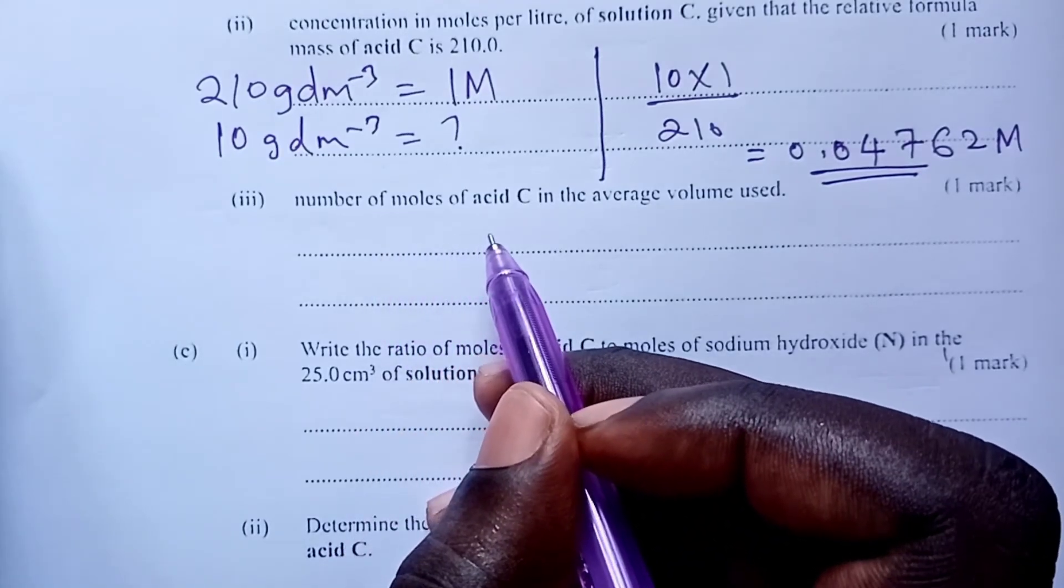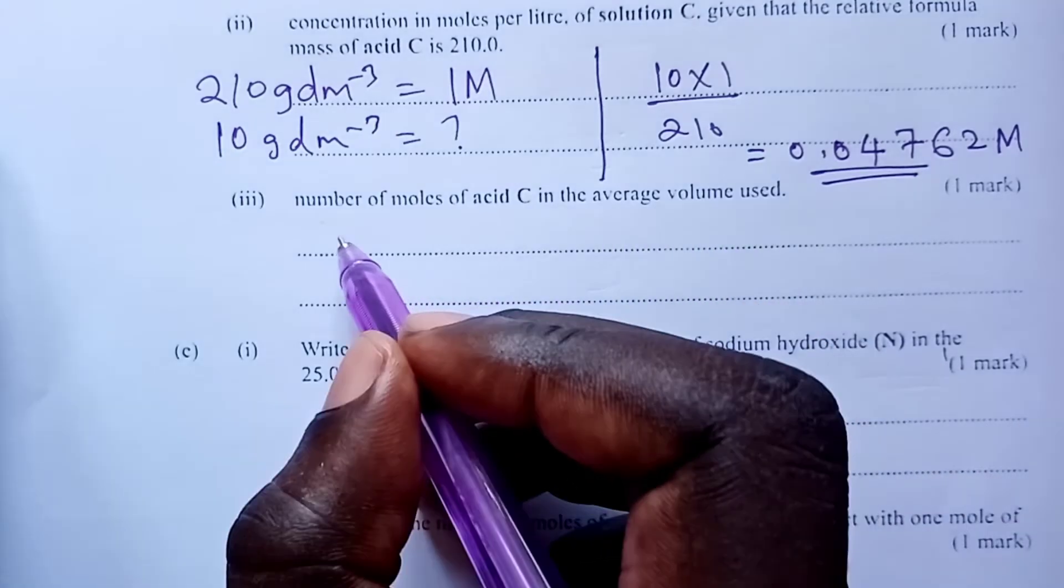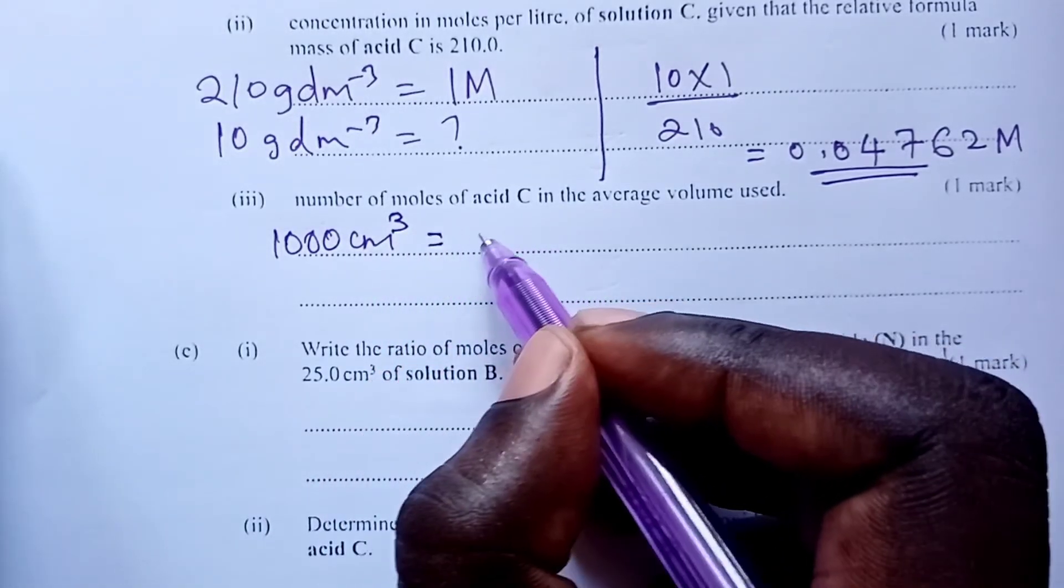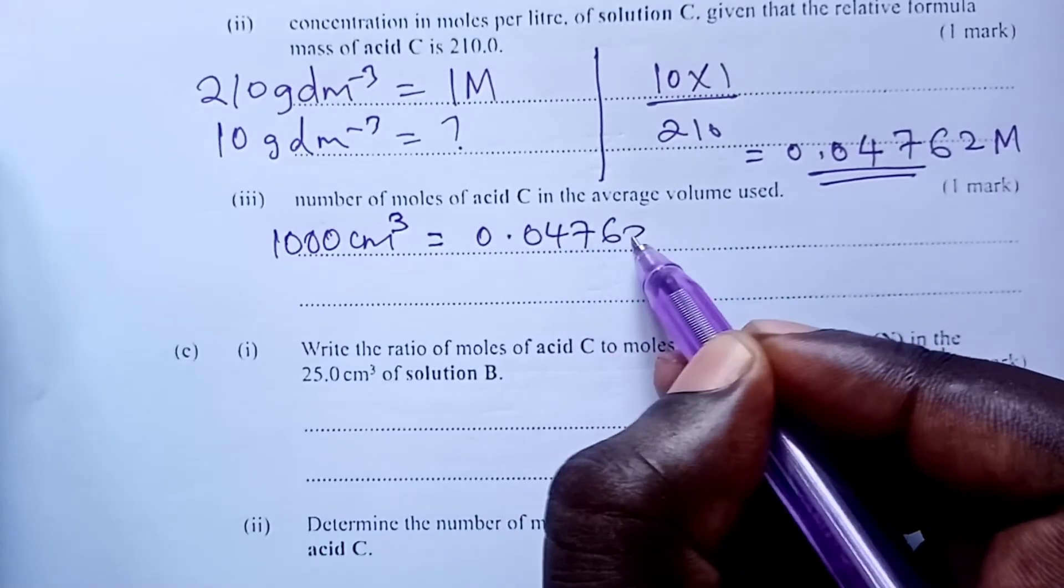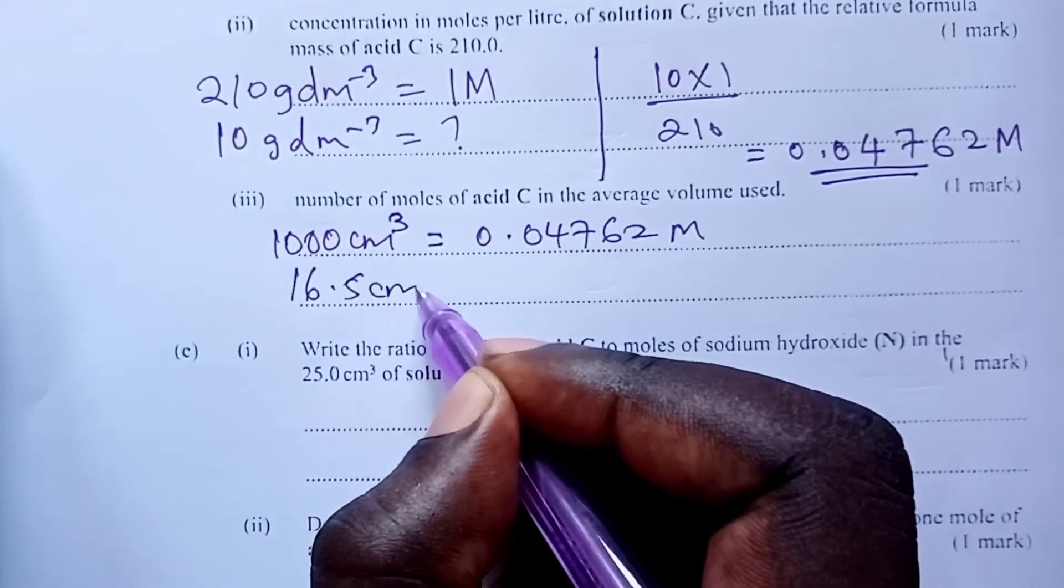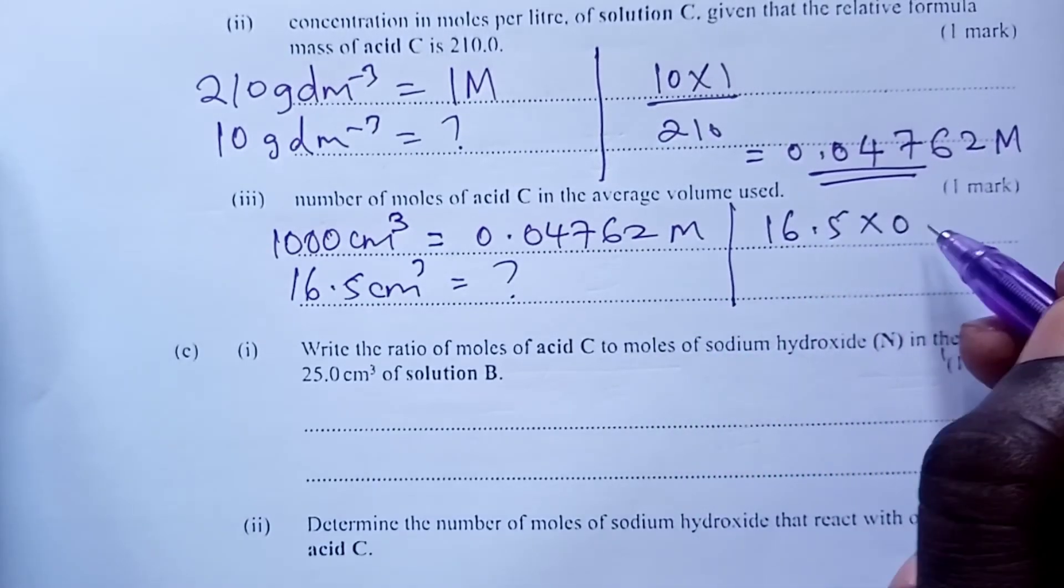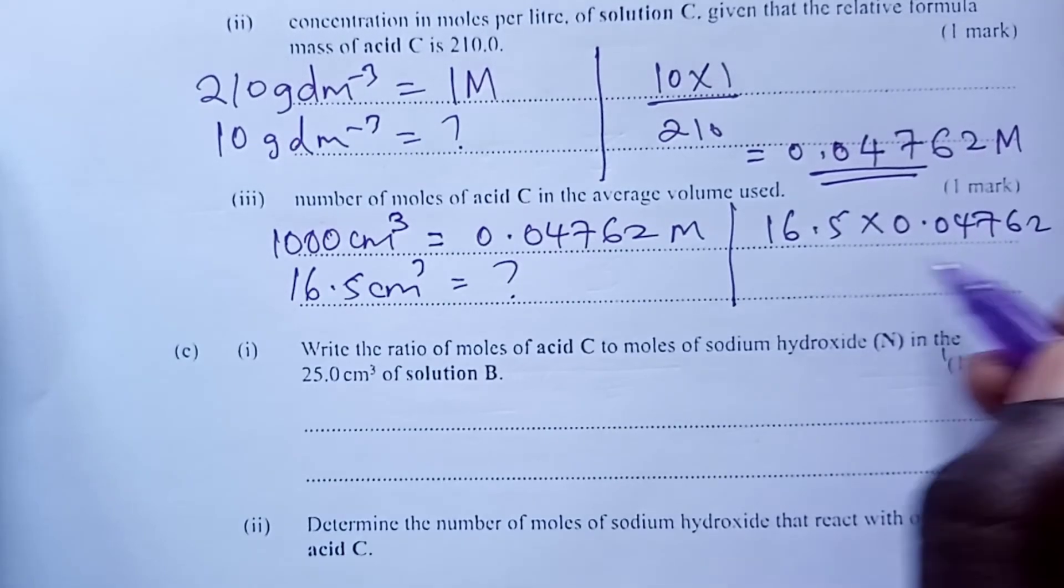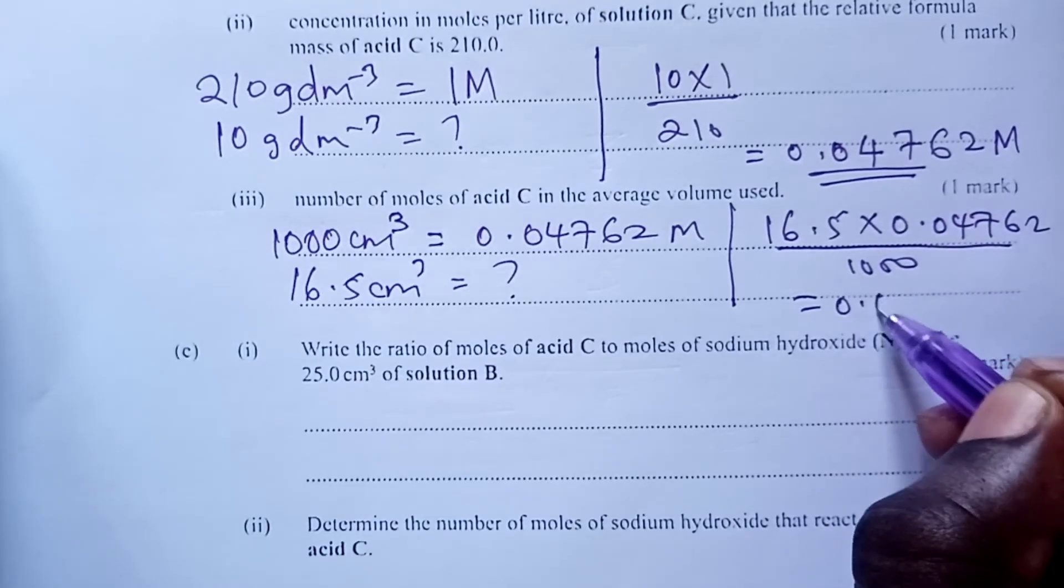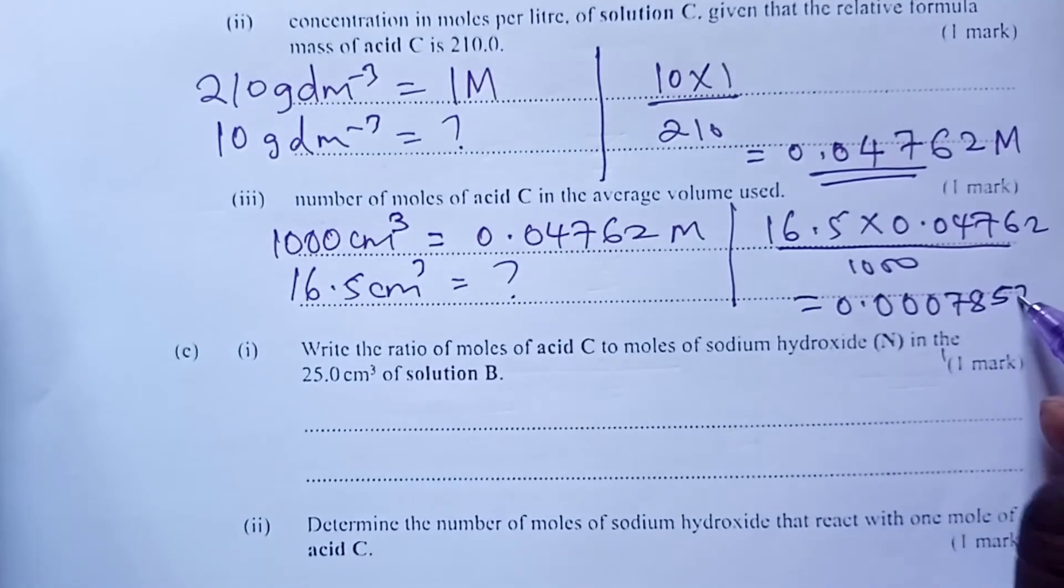Number of moles of acid C used in the average volume. So 1,000 cubic centimeters, as we have just said up there, would have 0.04762 moles. But we only used, according to our average volume, 16.5 cubic centimeter. This would have how many moles? Cross multiplication, 16.5 times 0.04762 divided by 1,000. And I'm getting 0.0007857 moles.